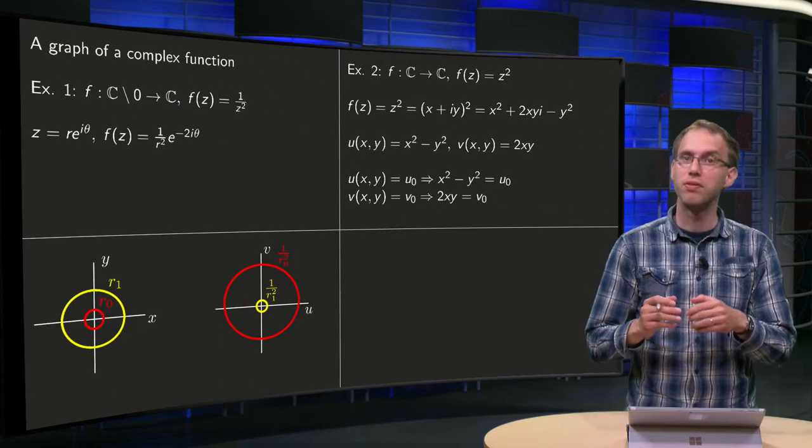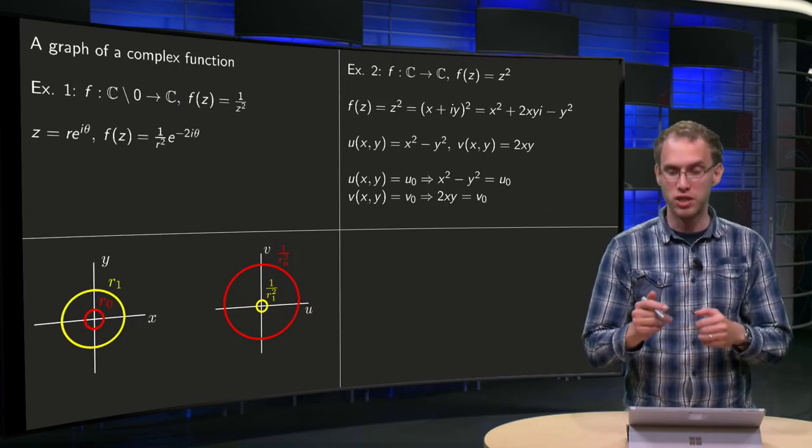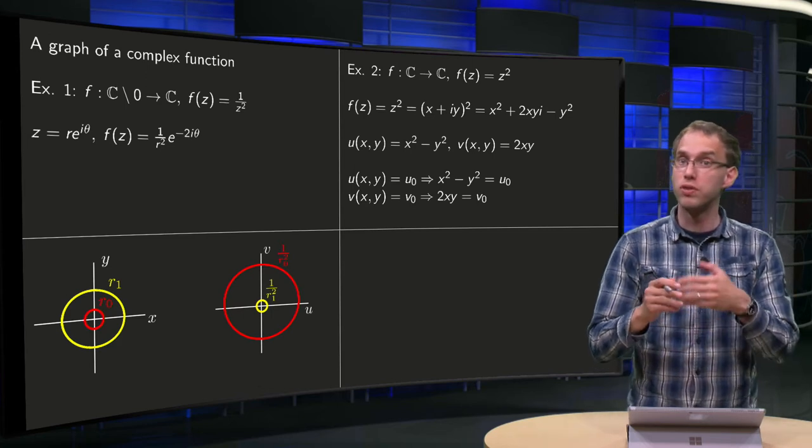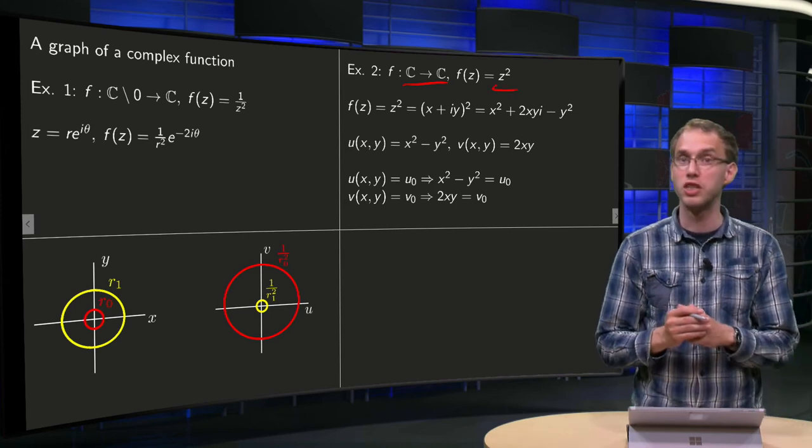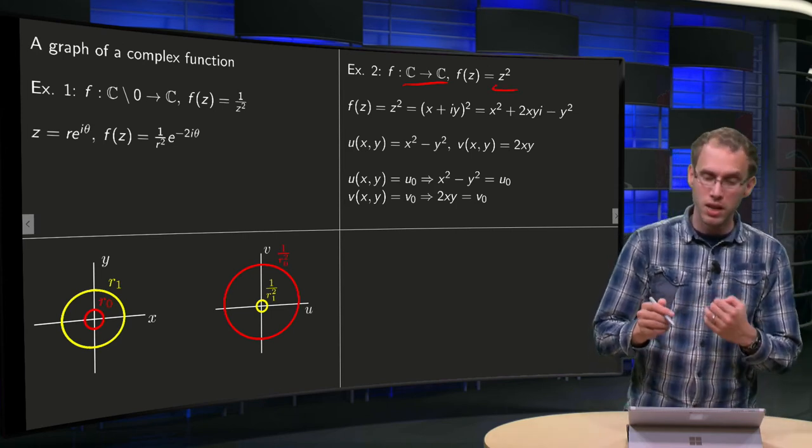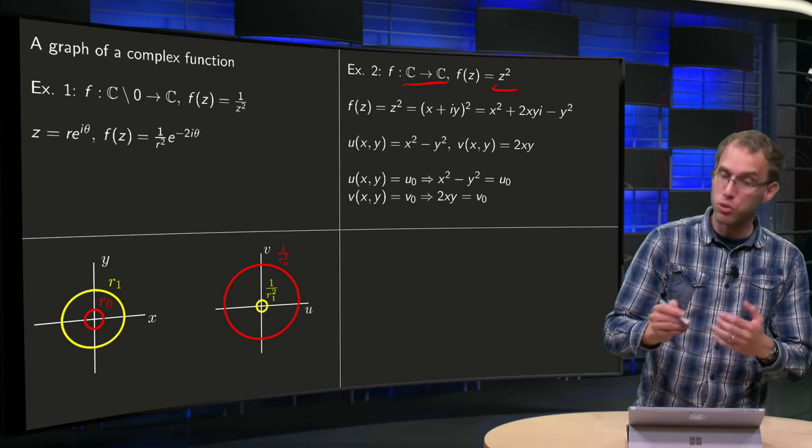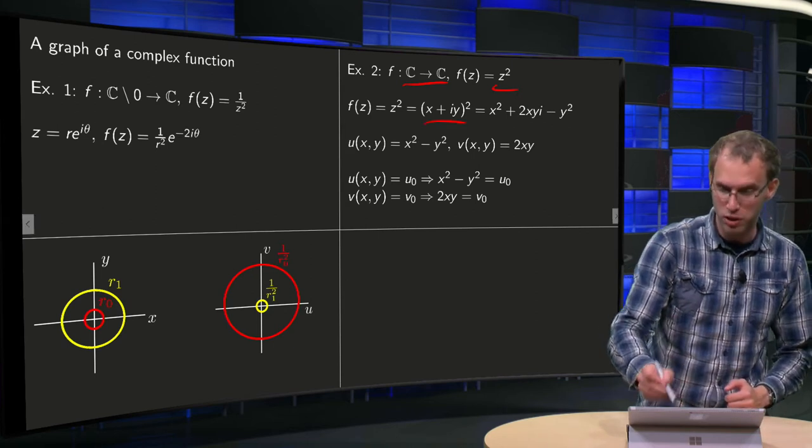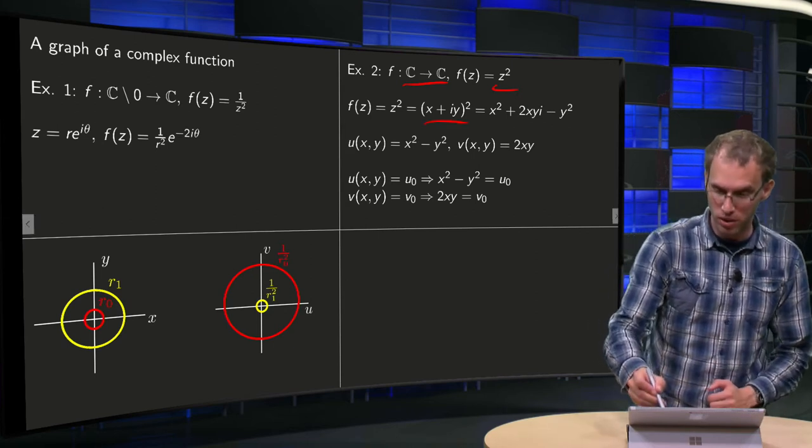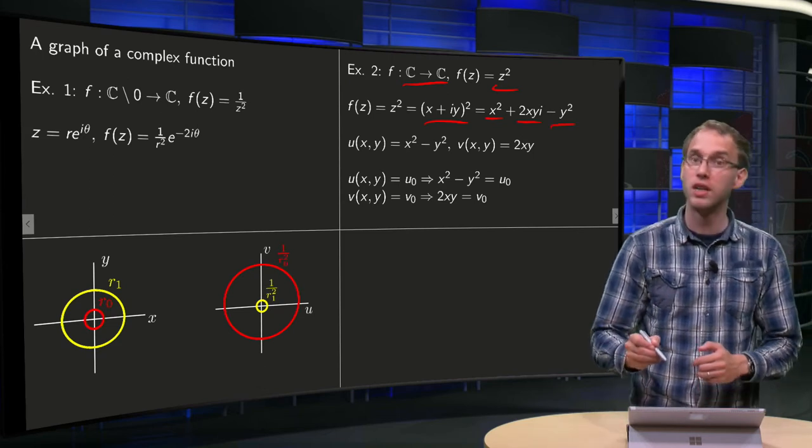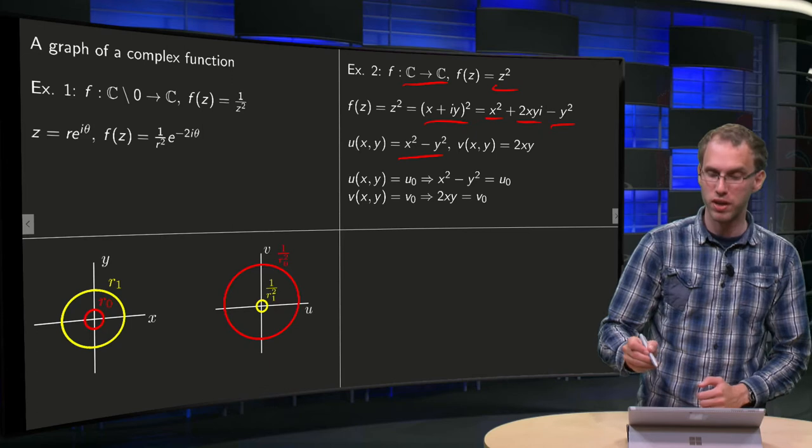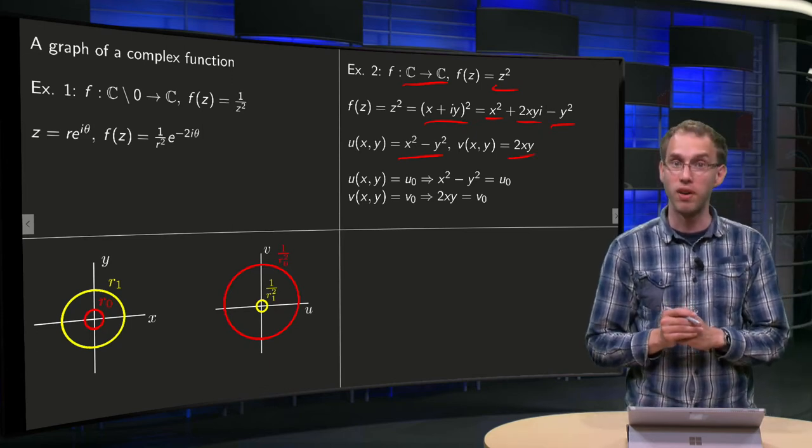So what happens if you would try, in this case with z², to do it just with u and v and with x and y? So we have f from C to C, f(z) = z². We put z² = (x + iy)², so x² + 2xyi - y², so u = x² - y² and v = 2xy.